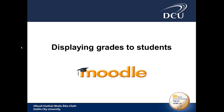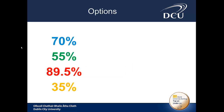Traditionally, students are used to getting a mark — it could be a mark out of 10 or 20, but most likely they're used to getting percentage marks. However, providing exact marks to students can sometimes distract them, insofar as they pay more attention to the mark they receive instead of the feedback provided with that mark. Therefore, sometimes it's better just to provide a representation of the mark.